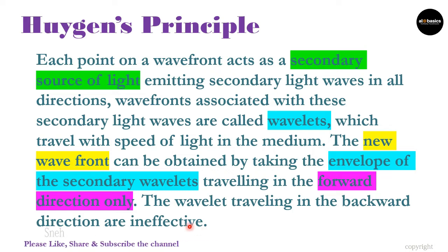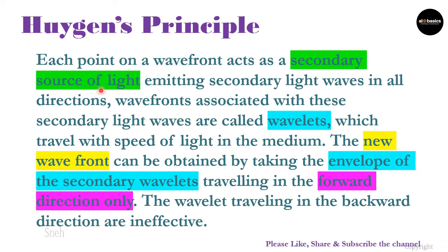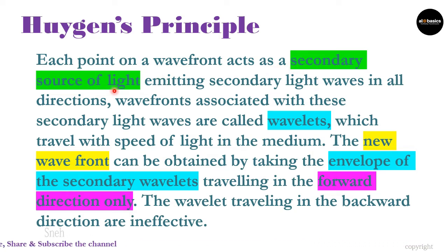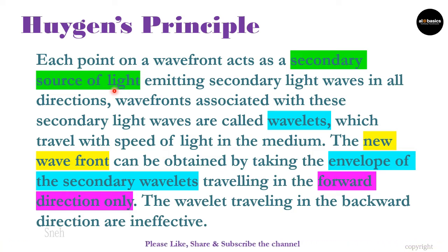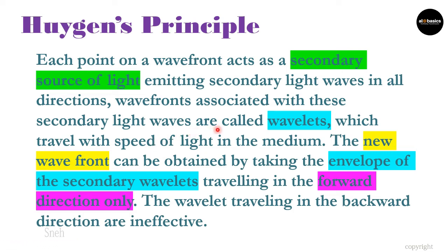Huygens' Principle says that each and every point on the wavefront acts as a secondary source. We have seen in an earlier video what primary sources and secondary sources are — I am giving the link of that video here. As it is a secondary source of light, it is not producing its own light but is reflecting the light from the source of light. This secondary source of light is again emitting secondary light waves in all possible directions, and the wavefronts associated with these secondary light waves are called wavelets.